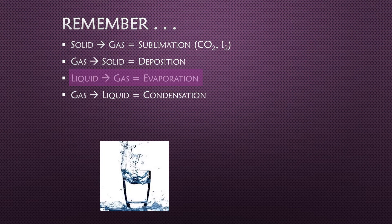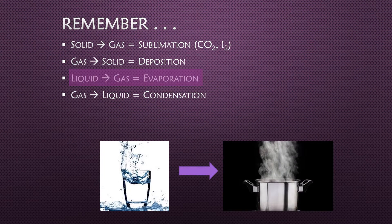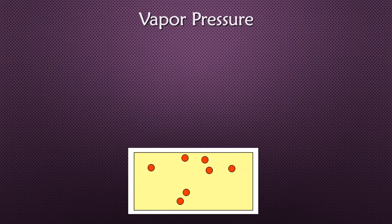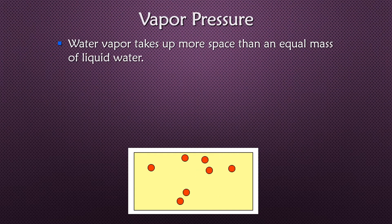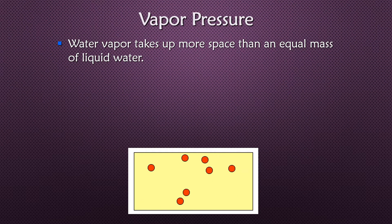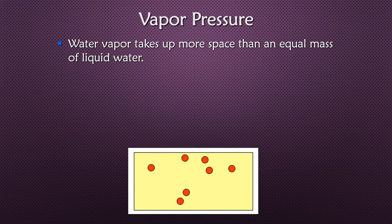Let's say we have liquid water converting into steam — the water is evaporating into water vapor, so we have a liquid going to a gas. Those water vapors, being a gas, will take up much more space compared to liquid water, because gas particles have much more space between them.